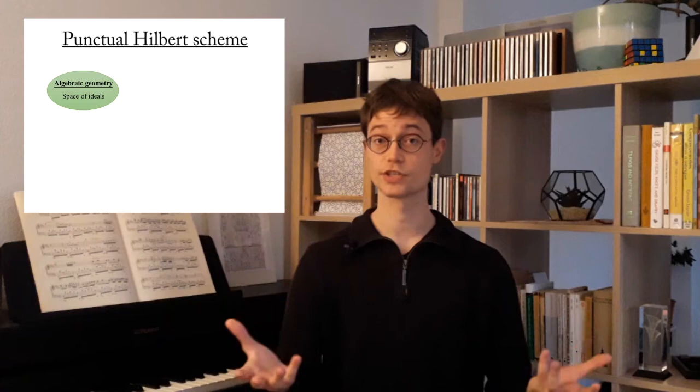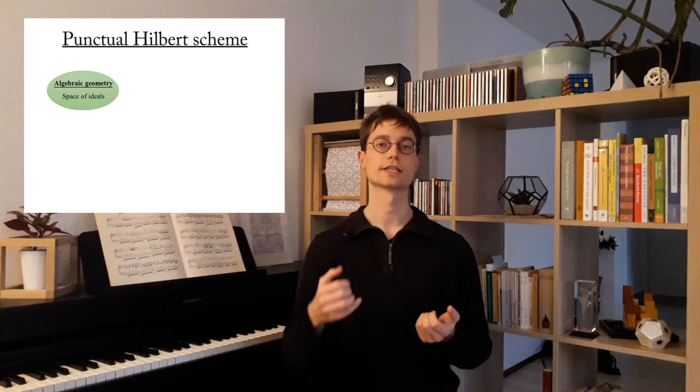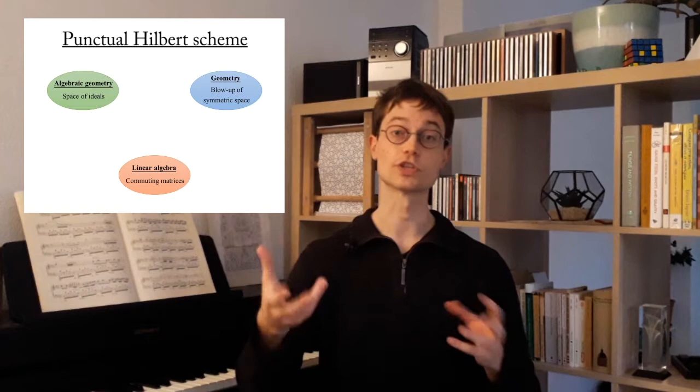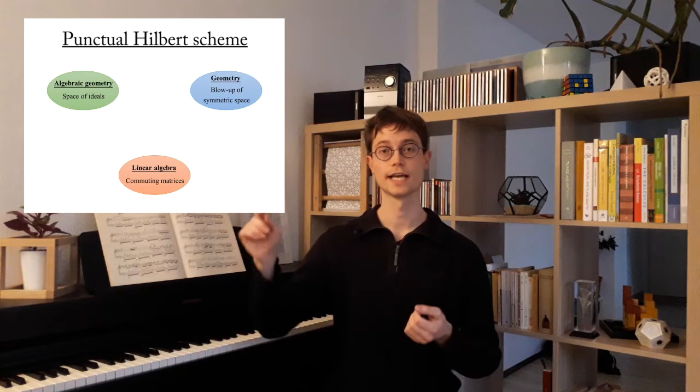The punctual Hilbert scheme is an interesting mathematical object because it allows different equivalent definitions which link together different areas of mathematics. The most direct way to define it is to use algebraic geometry and to define it as a space of special ideals. You can also define it geometrically as the blow-up of the symmetric space. Finally, you can also define it purely in terms of linear algebra as a space of pairs of commuting matrices. The main part of this talk consists in describing these three viewpoints and understanding the links which exist between them.